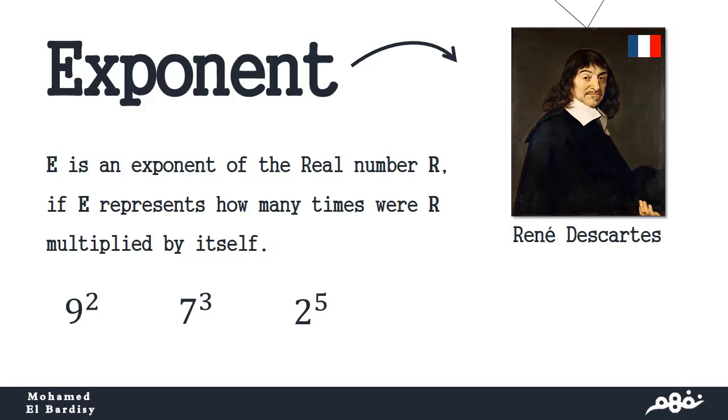What does exponent mean? We say e is an exponent of the real number r if e represents how many times r was multiplied by itself. And we have examples like 9 to the power 2, 7 to the power 3, 2 to the power 5.